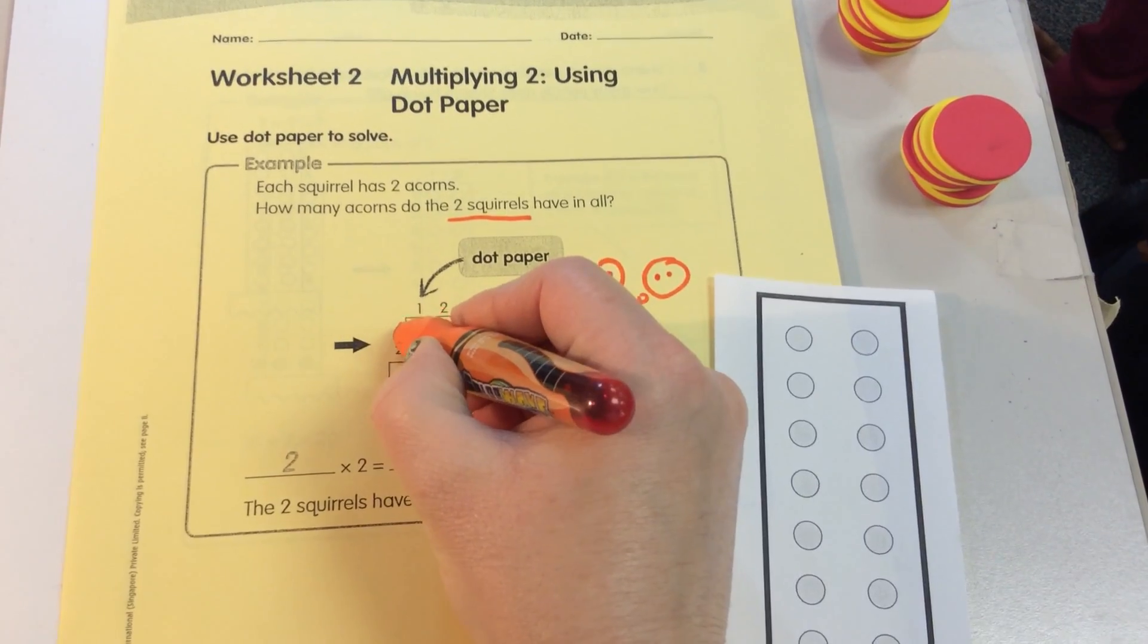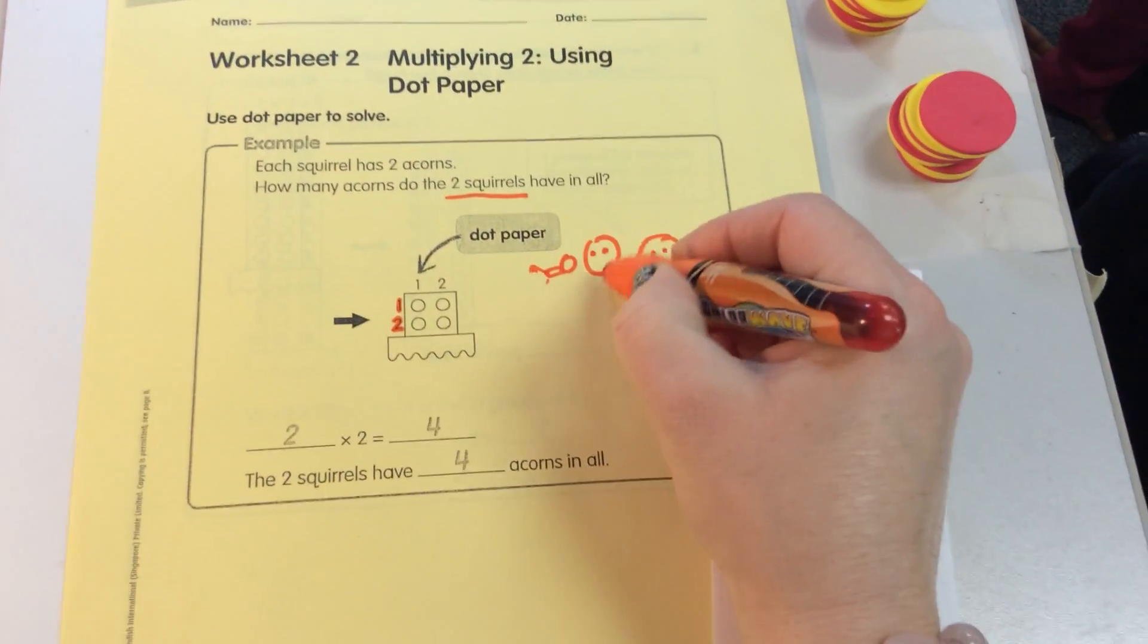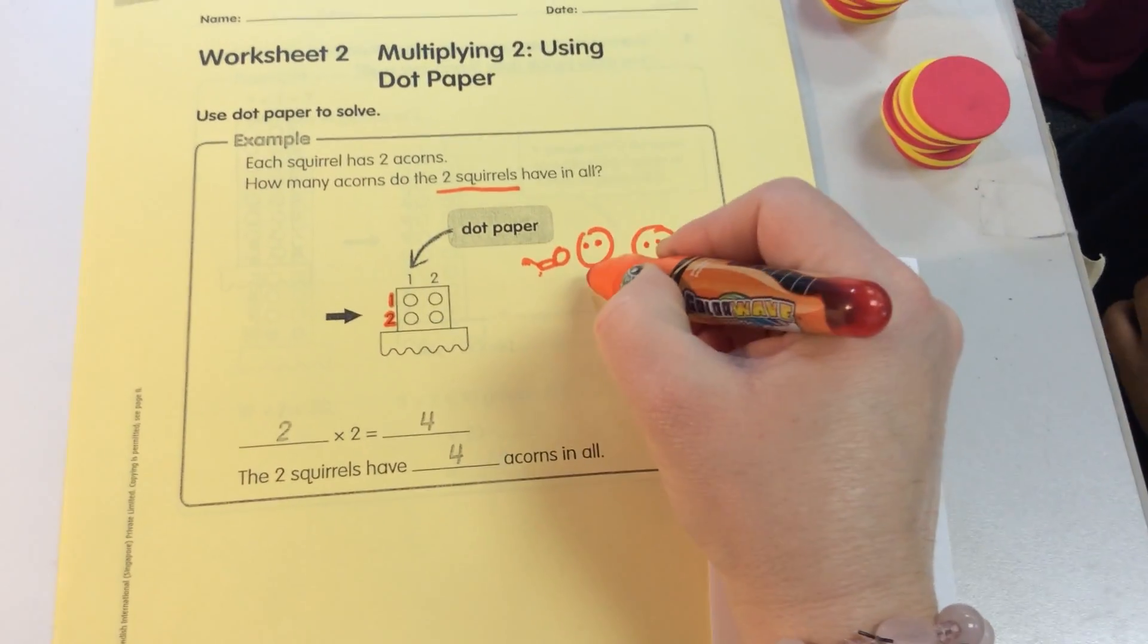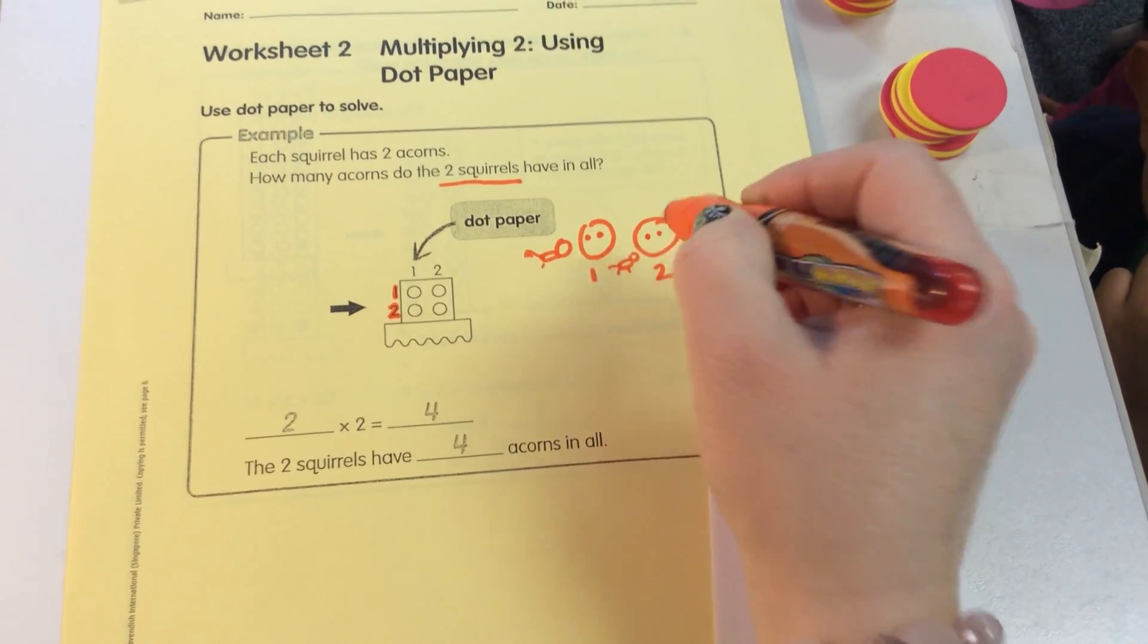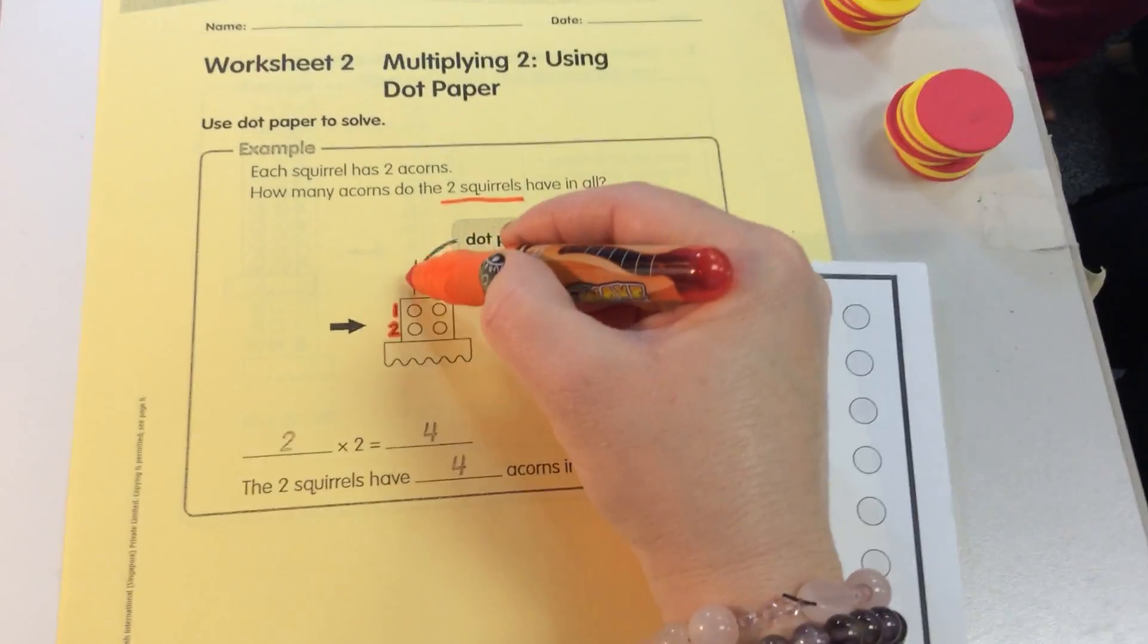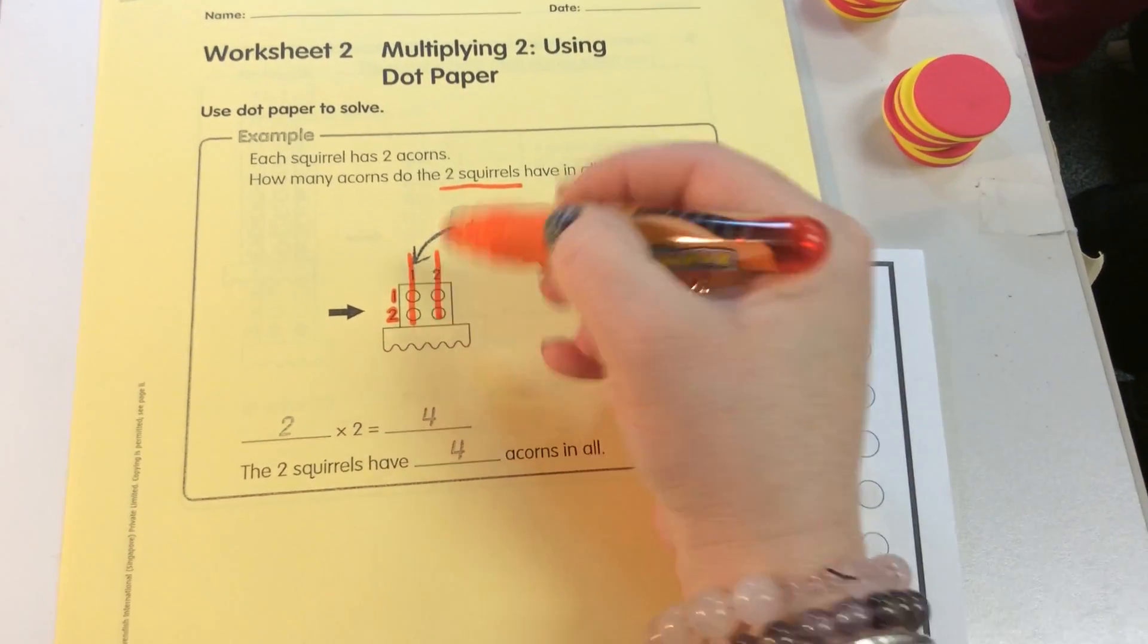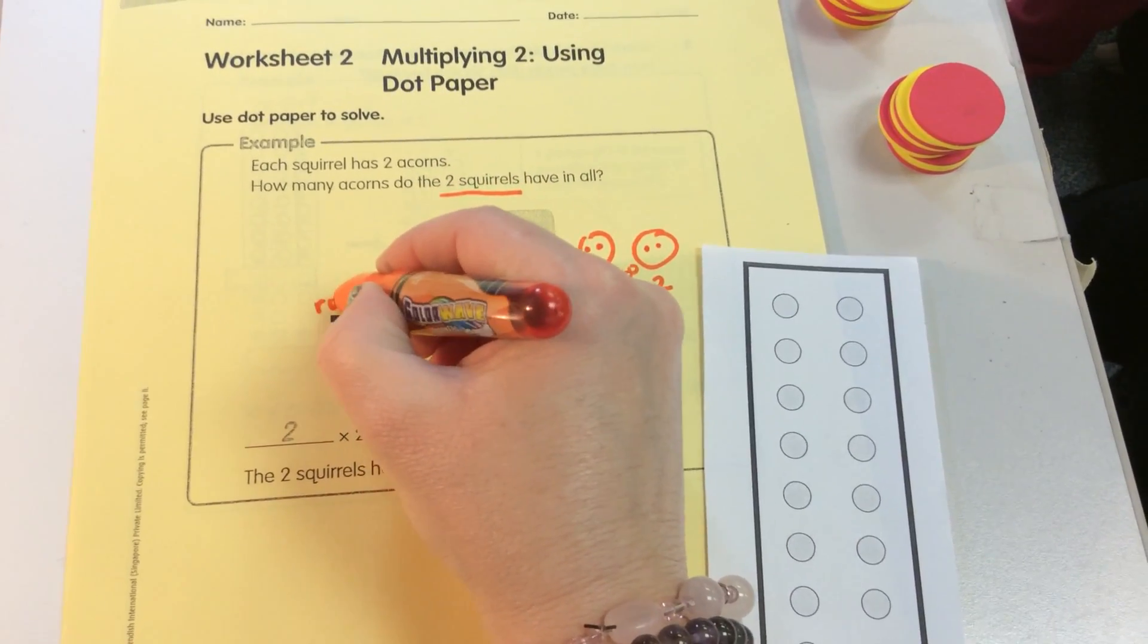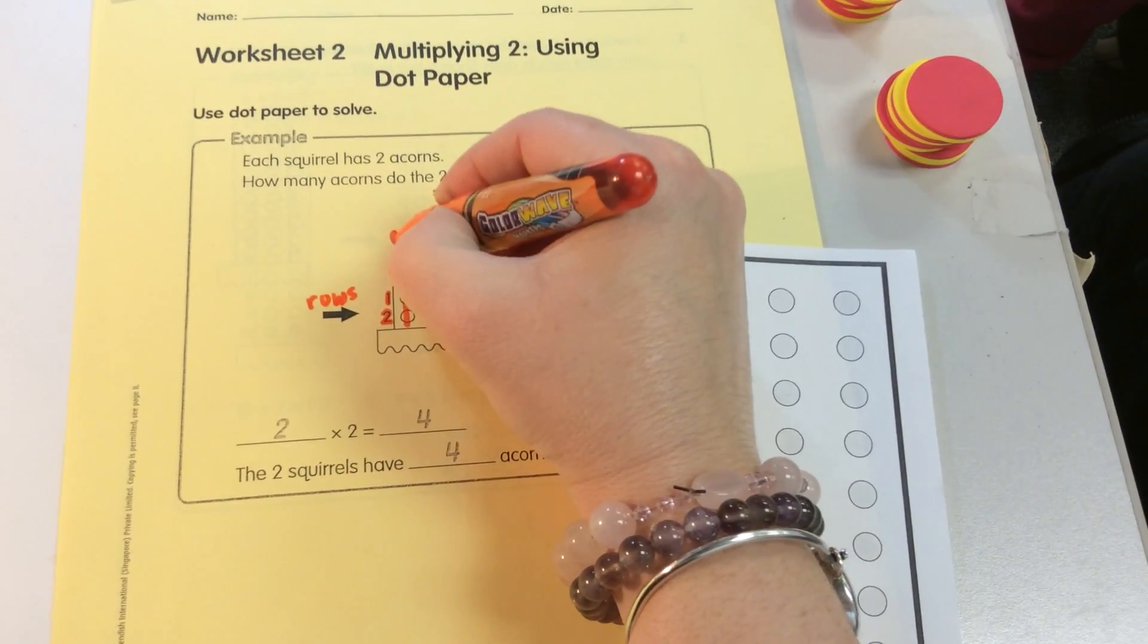Now we have 2 rows because we have 2 groups. Group 1 and group 2. Now then we see we have 2 columns. Now these are the rows and these are the columns.